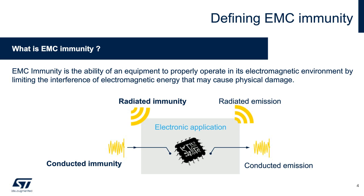ESD can be either conducted under the form of a transient voltage, but it can also be radiated due to its fast-rising time, generating harmonics sufficient to disturb the right behavior of your application by coupling with other signals. This means that ESD is a threat against which your printed circuit boards must be protected.